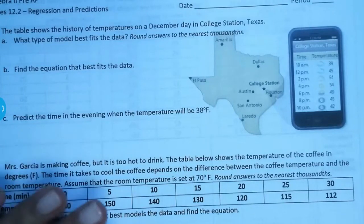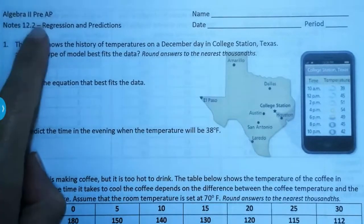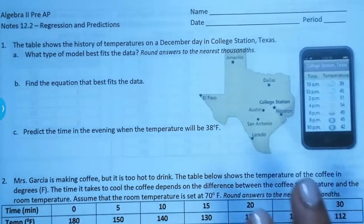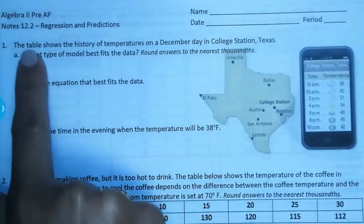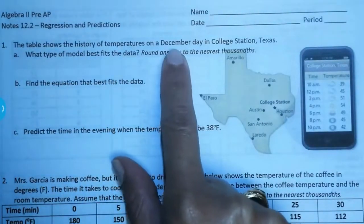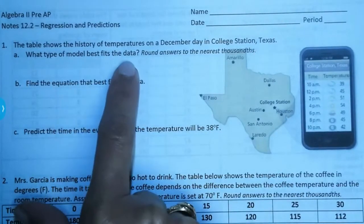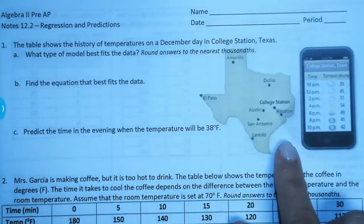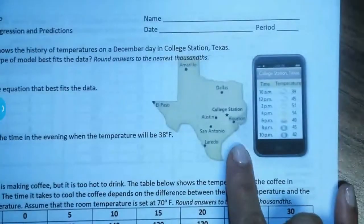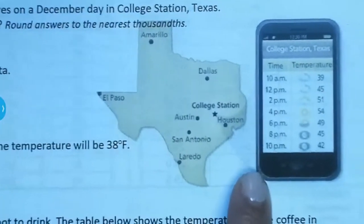Welcome to the last lesson of the year, section 12.2. We're going to be making regression models and making predictions with those regression models. So number one, the table below shows the temperatures in December in College Station, Texas. We need to figure out what model best fits this data, find the equation, and make some predictions. We're going to type it into the calculator and find the best model — either linear, quadratic, or exponential.